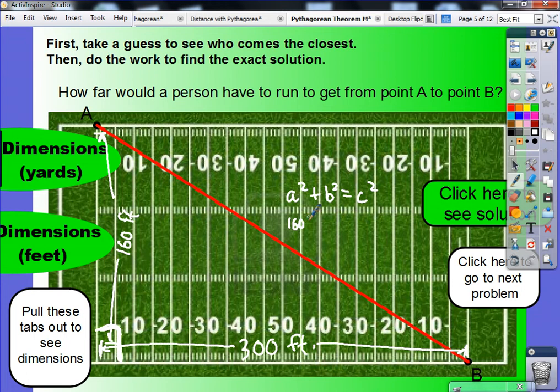Plug in my numbers here. So, I have to do 160 squared plus 300 squared equals c squared. And the 160 squared is 25,600. The 300 squared would be 90,000. Add those two numbers together. That's 115,600.